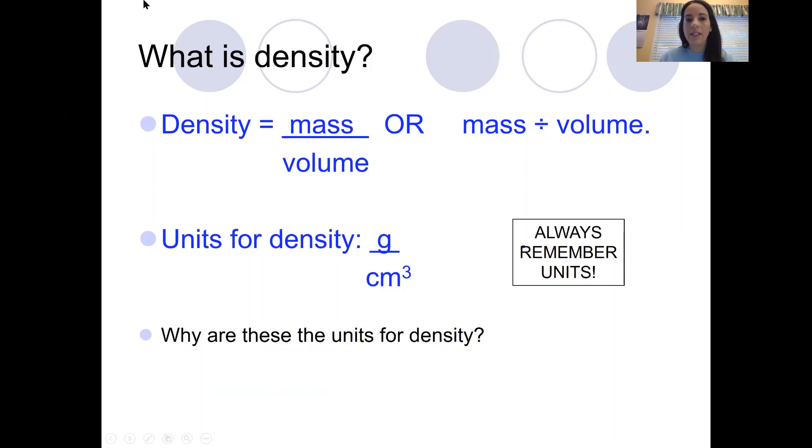When we're calculating density we have to take our mass divided by our volume. How much mass it has versus how much space it takes up. So density equals mass divided by volume. When you see this unit here, the centimeters cubed, it does not mean you have to take the volume and cube it.